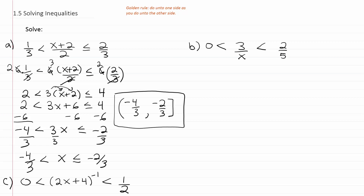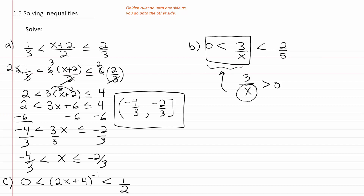Example B has a strange-looking compound inequality. The piece on the left is designed to tell us that x must be positive. If you have 3 over some number and that result is greater than 0 — basically 3/x > 0 — then x must be positive. If x were negative, 3 over a negative value would be negative, which would be less than 0. So this left piece just tells us that x is positive.